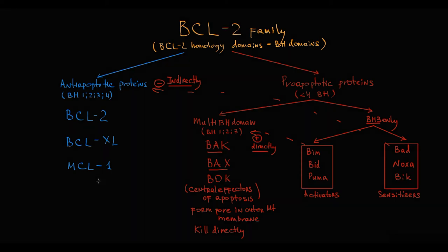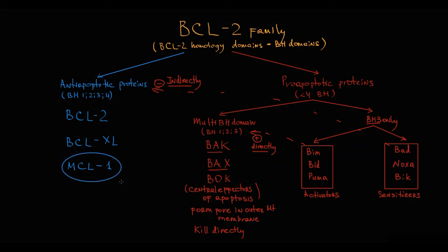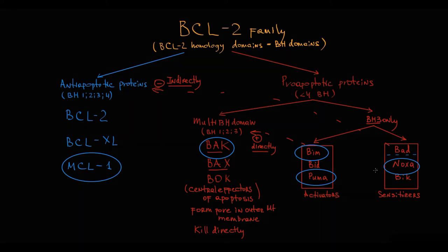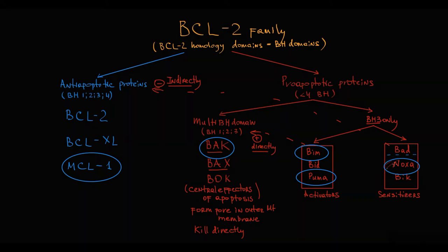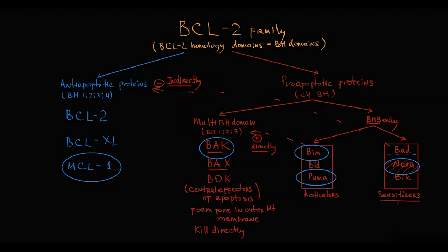Each anti-apoptotic protein has different binding affinity to pro-apoptotic proteins. For example, MCL-1, which is now considered the major player among anti-apoptotic proteins, has strong affinity for BAK, BIM, NOXA, and PUMA proteins, but weak affinity for the BAD pro-apoptotic protein. However, this high affinity of MCL-1 for NOXA is actually a weak spot, because NOXA belongs to the sensitizer group of BH3-only proteins that inactivate anti-apoptotic proteins.